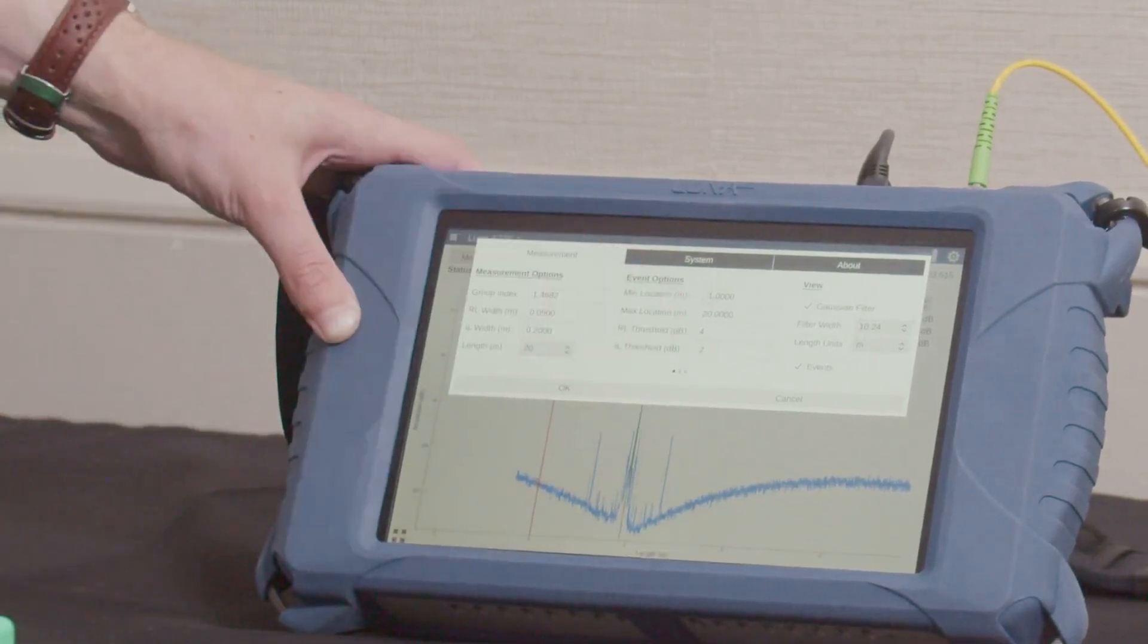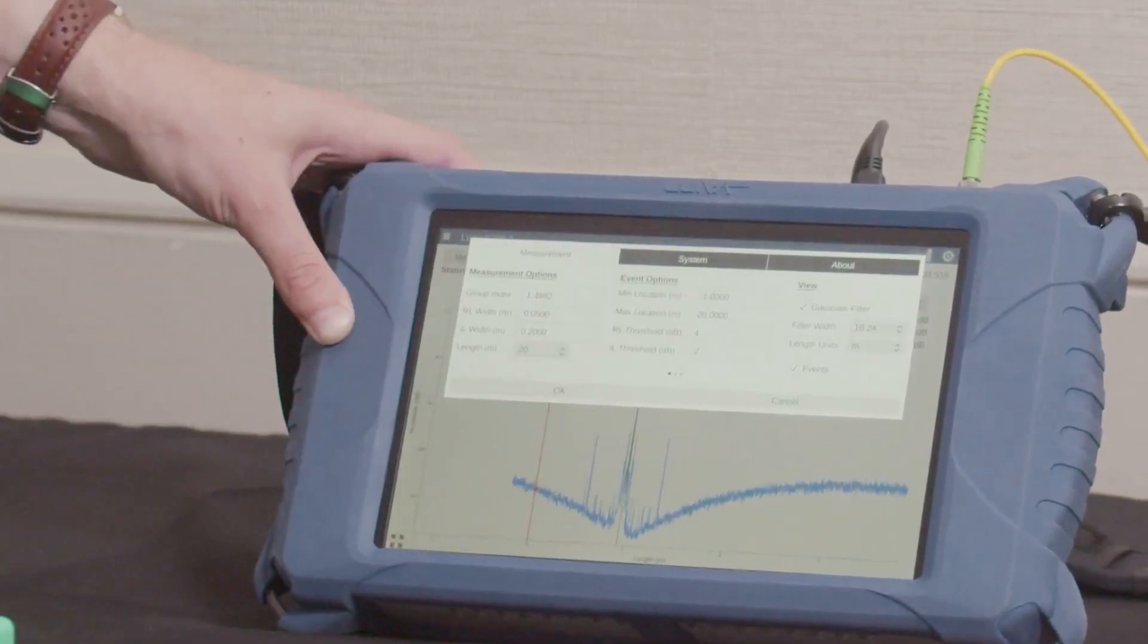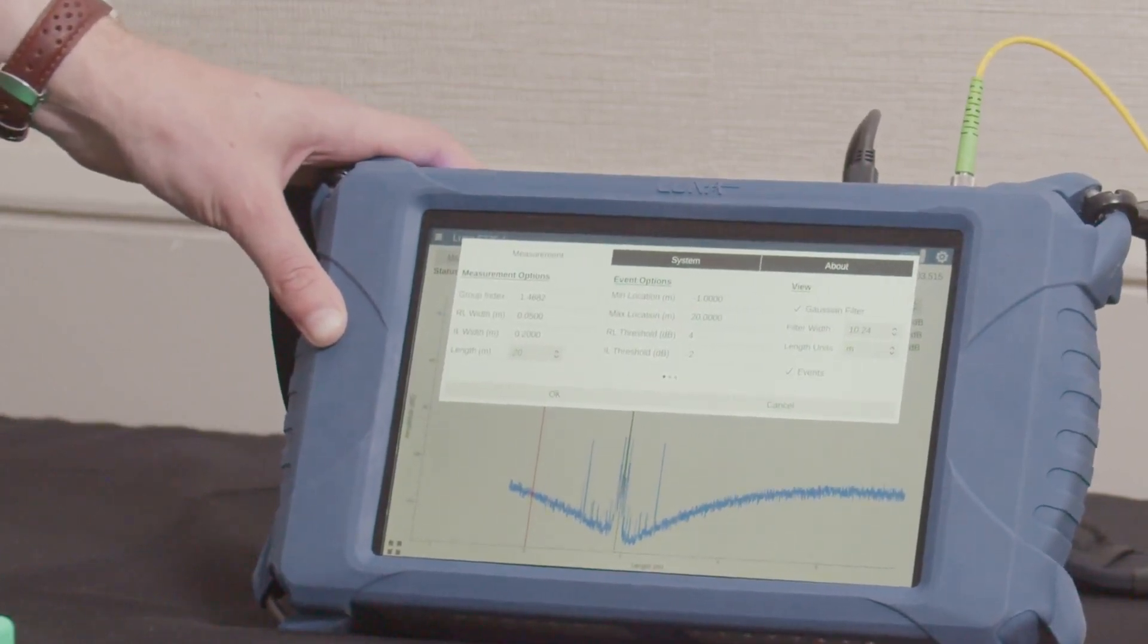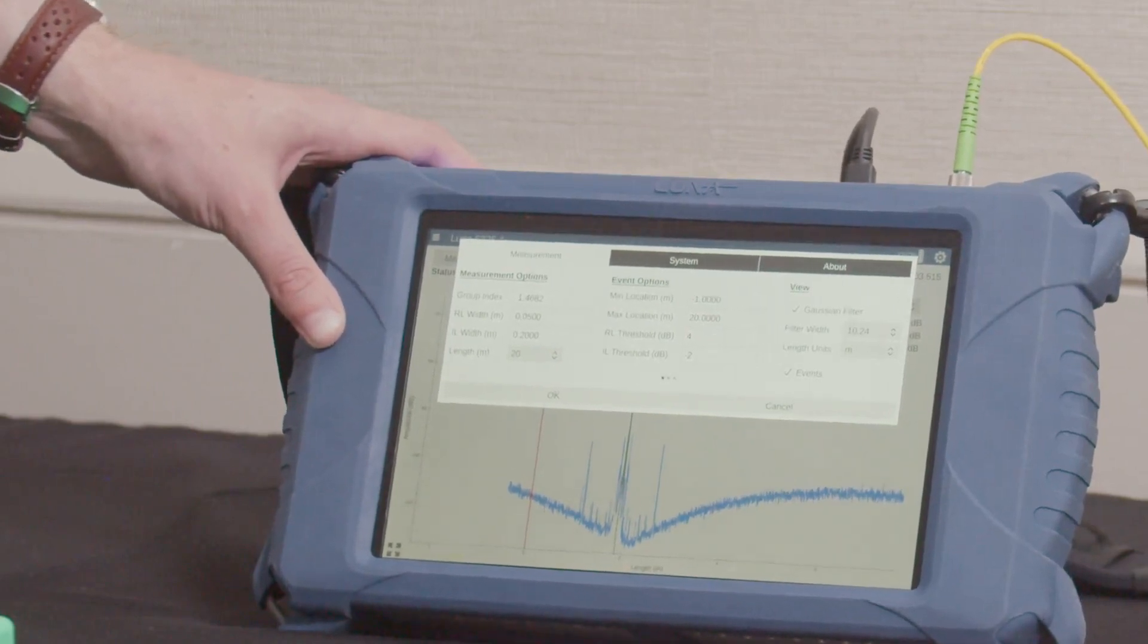And then we have two thresholds. The return loss threshold is essentially how prominent is your peak. Is your peak going to be just a couple dB above the Rayleigh scatter level? Or are you looking for something that is 10, 20, 30 dB up?